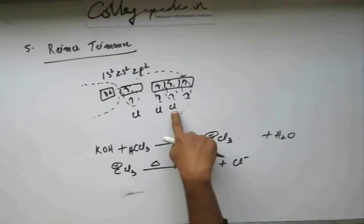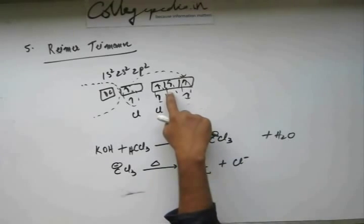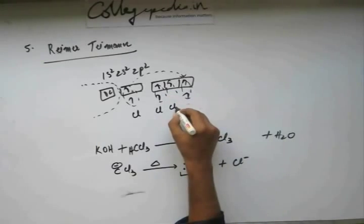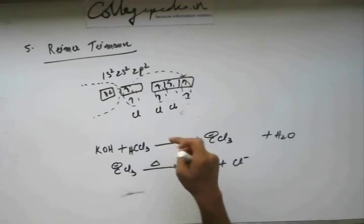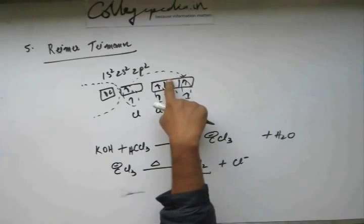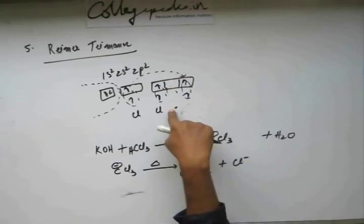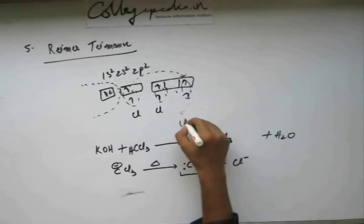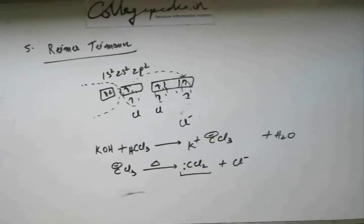Now suppose this chlorine goes away, now if this chlorine goes away, then it will take its own electron, this one. This belongs to chlorine, so chlorine Cl dot goes away. But it also takes electron of carbon, that's why it goes away as Cl-. So one of the electrons of carbon will also be taken away by this chlorine and it comes out as Cl-.